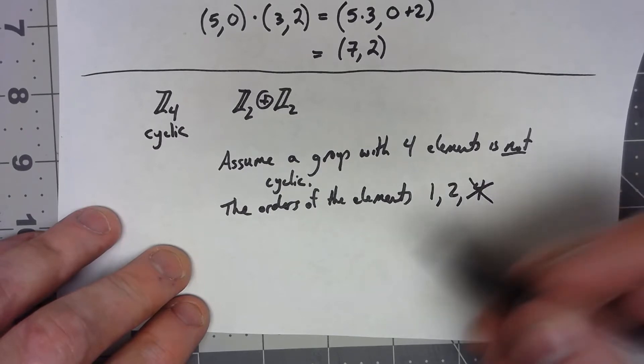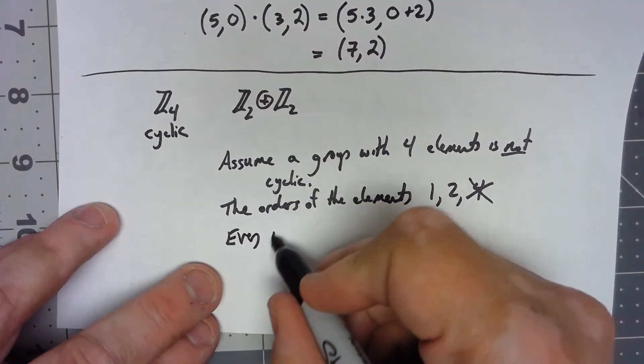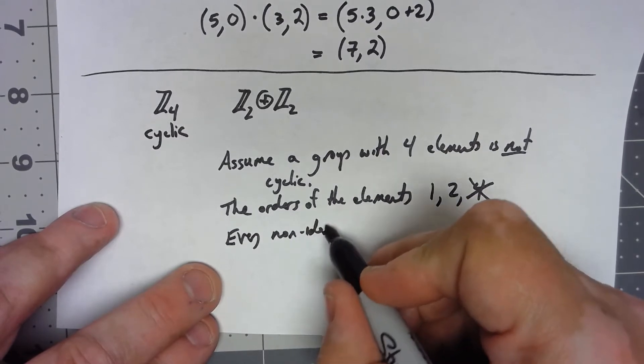Well, the only element with order one is the identity. So what that says is that every non-identity element has order two.